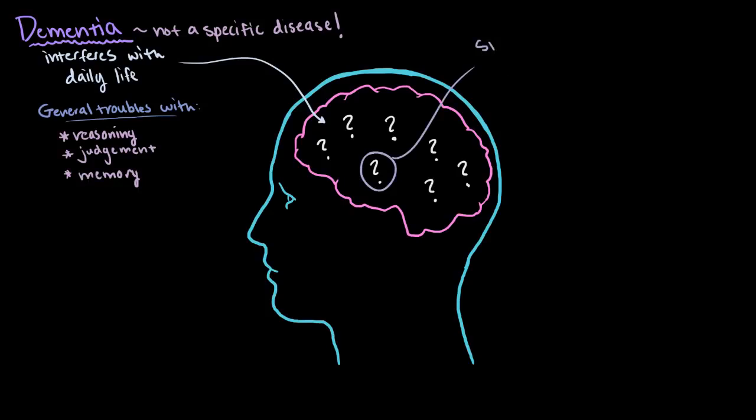For example, somebody with dementia might have troubles with speaking or writing coherently, or understanding what was spoken or written. They also might have trouble recognizing their surroundings, especially when those surroundings should normally be very familiar to them.